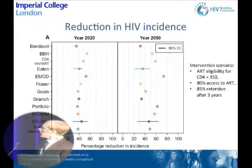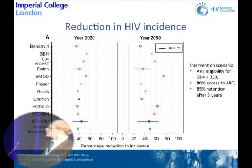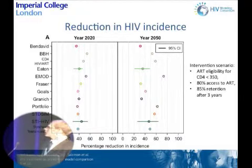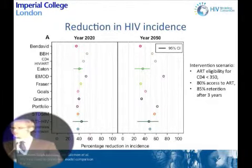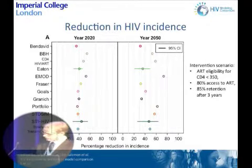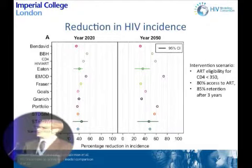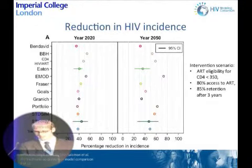Looking at the impact of the ART programs: for an intervention scenario where individuals are eligible for ART when their CD4 count falls below 350, 80% of the population has access to ART, and retention after three years is 85% — in 2020, eight years after initiation, the models predicted incidence would be between 35% and 54% lower than without ART. By 2050, the range of results was much larger, with models ranging between a 32% and 74% reduction in incidence.